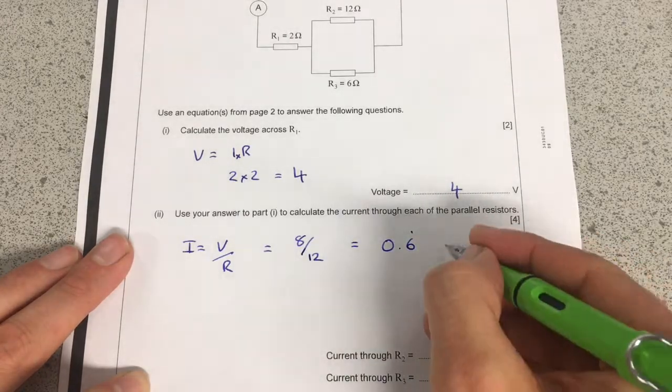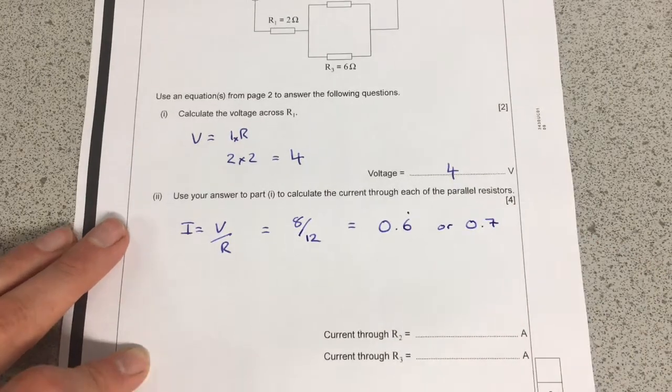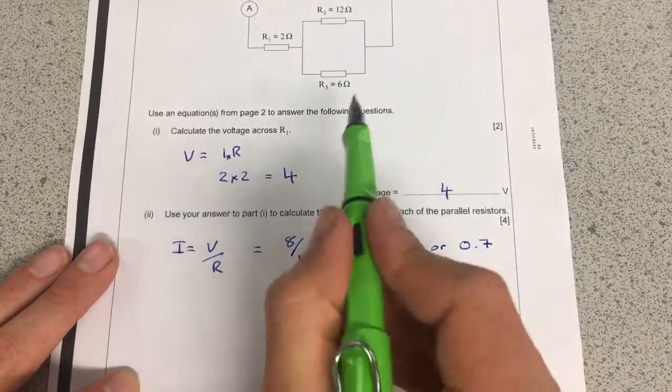Be really careful to put that recurring in, or you can put in 0.7. That's fine as well. So then we need to do it again, for the second resistor here.